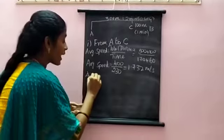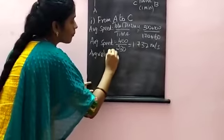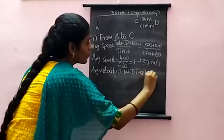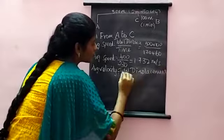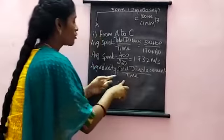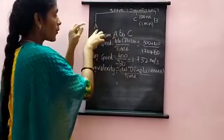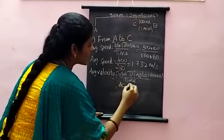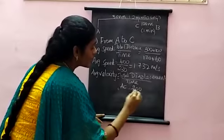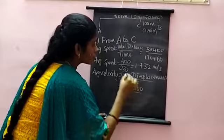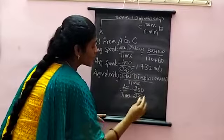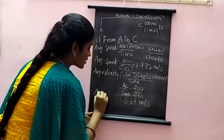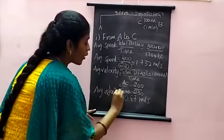Now we calculate average velocity from A to C. The formula is total displacement divided by time. The displacement is from the initial point A to the final point C. The distance A to C is 200 meters, and she took 230 seconds total to cover this. So average velocity equals 200 divided by 230, which gives 0.87 meters per second. This is the average velocity from point A to C.